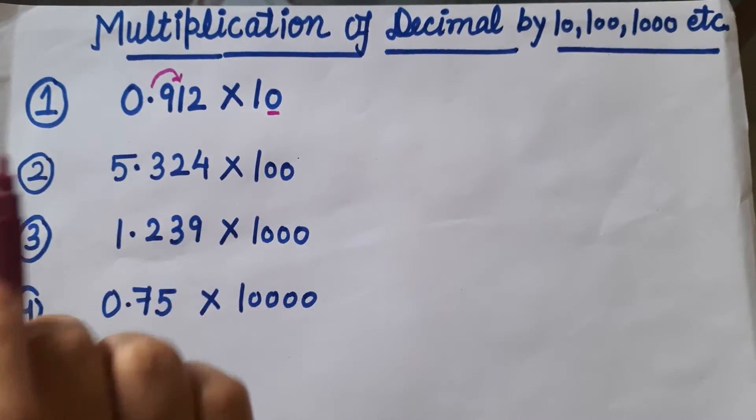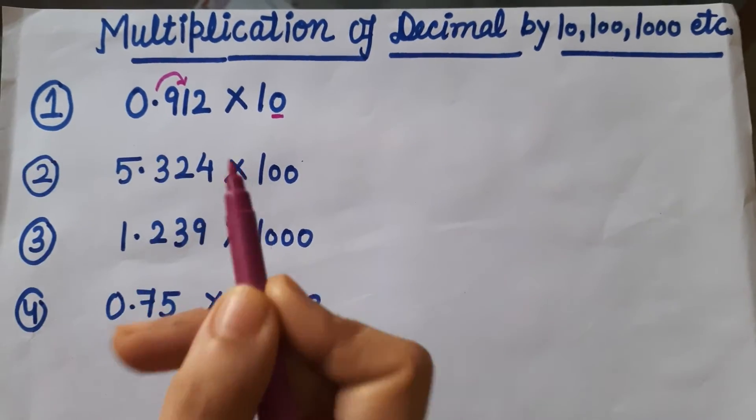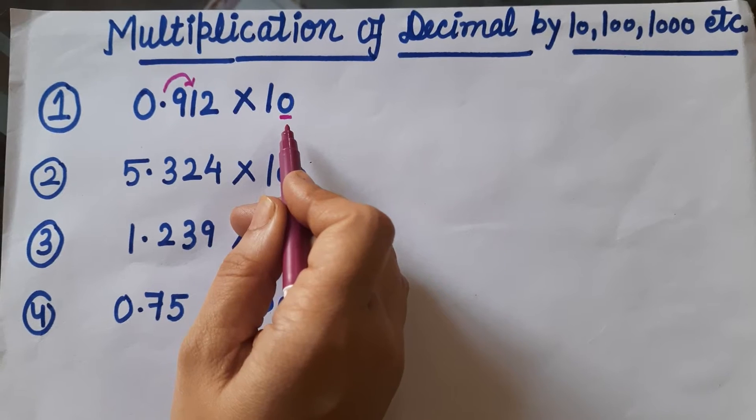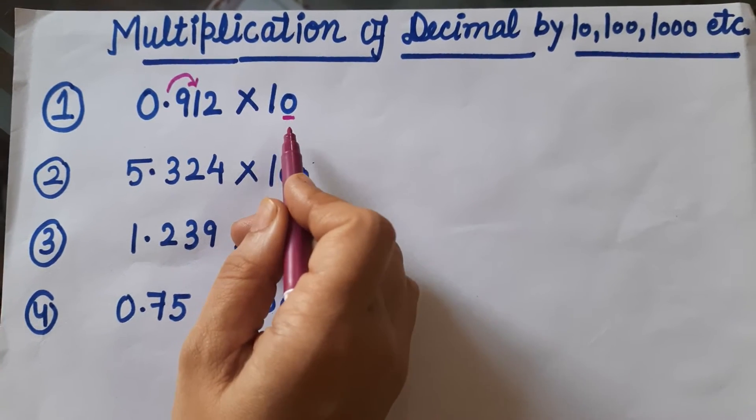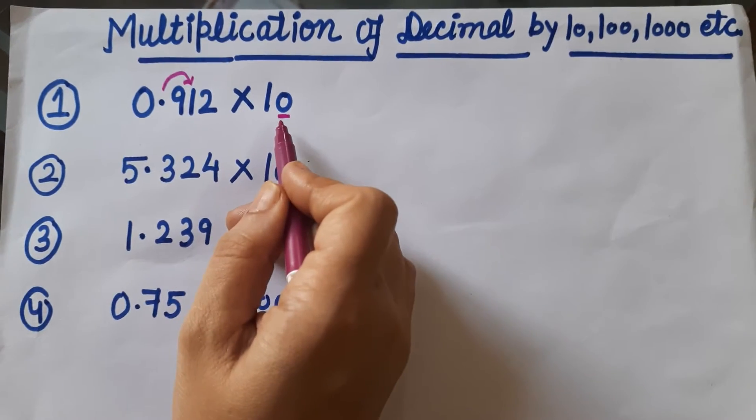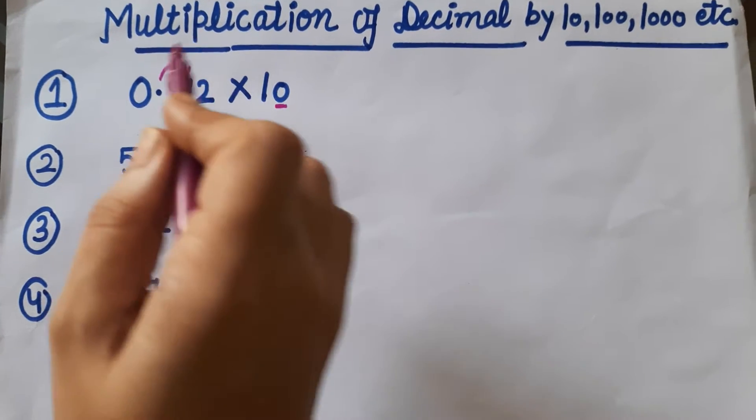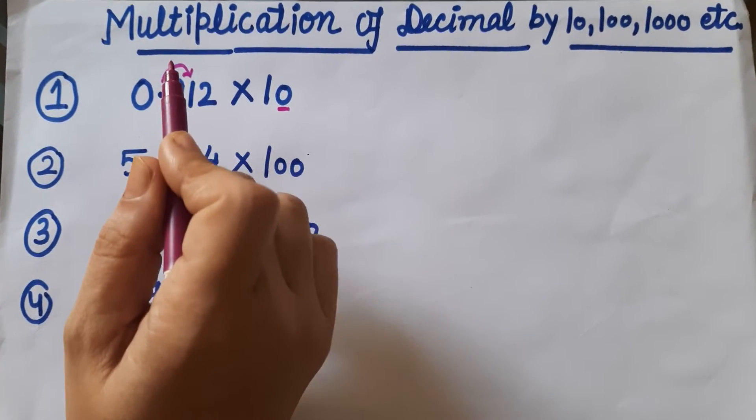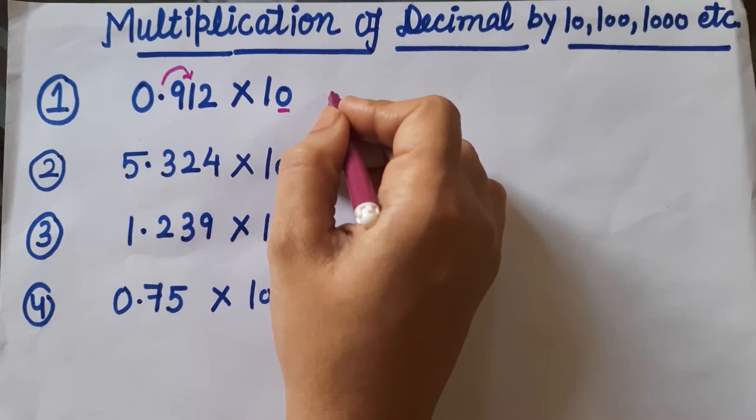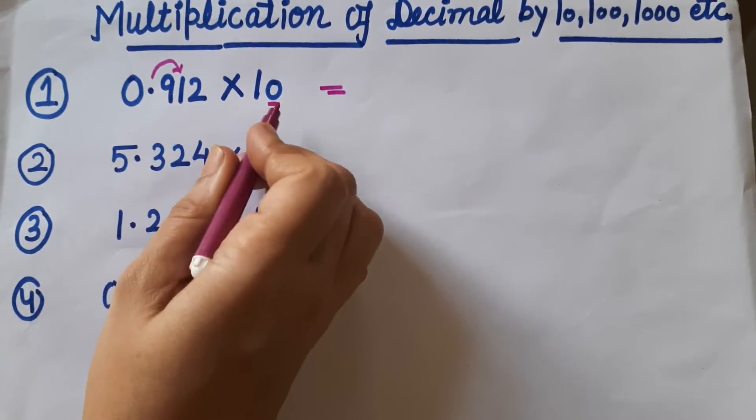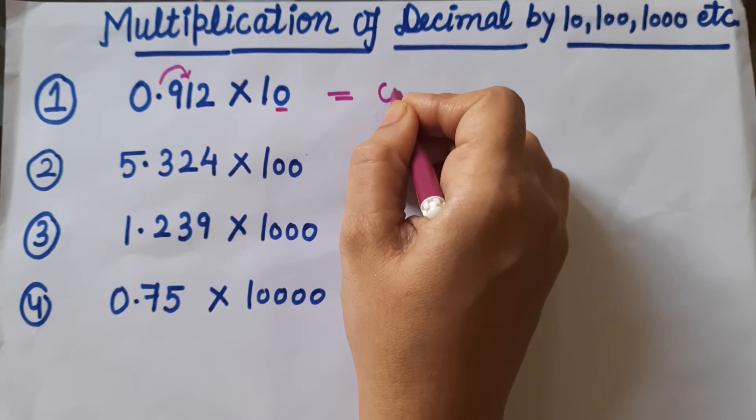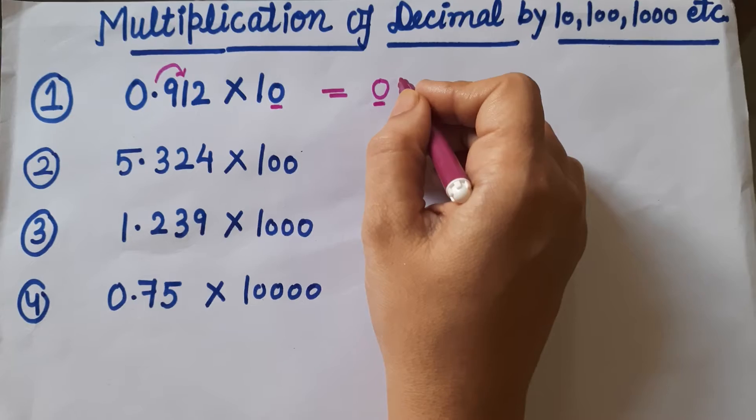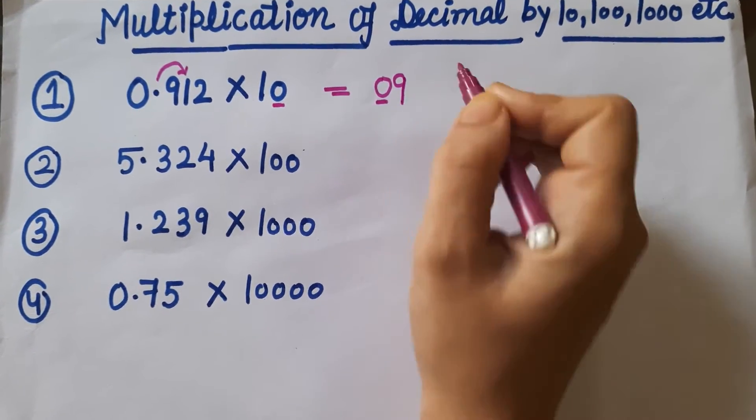To the right side. How many steps? That equals the number of zeros we counted. Here we counted 1 zero, so the decimal will move to the right side only 1 digit. When we multiply these terms, our answer will become 0.9—you can write the 0 or not, it's optional.